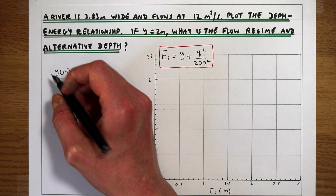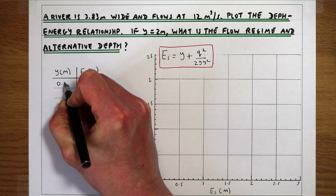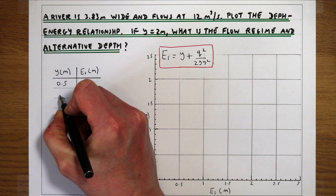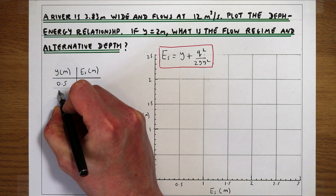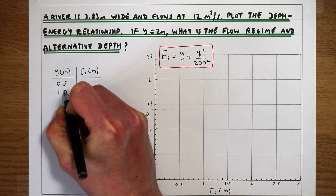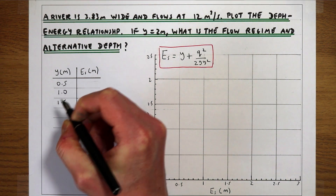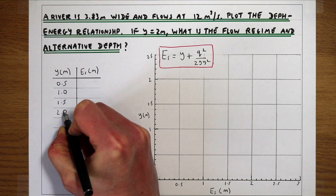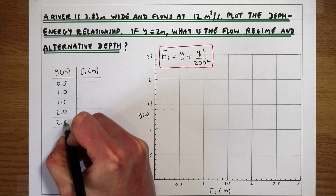We'll do it for values of y going up in increments of 0.5 meters, so y is 0.5, y is 1, y is 1.5, y is 2, and y is 2.5.